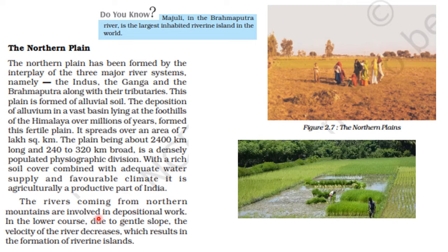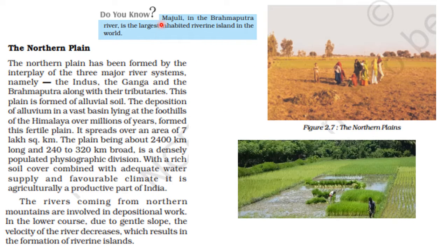The rivers coming from the northern mountains are involved in depositional work in the lower course. Due to the gentle slope, the velocity of the river decreases, which results in the formation of riverine islands. An island is a piece of land surrounded by water on all sides, and the rivers of the northern plains also form many such islands in their basins, especially in the lower course and deltaic areas.